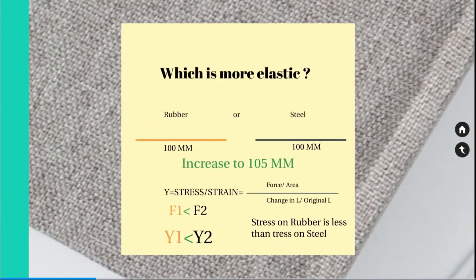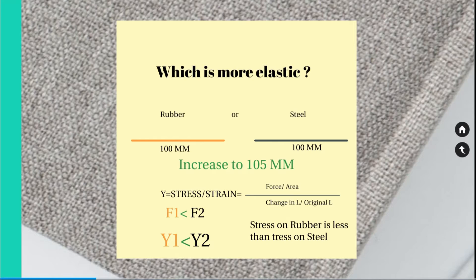Can you say which material is more elastic — rubber or steel? If you don't understand elasticity, you may say rubber is the most elastic material, because most people think that elasticity and flexibility are the same, but they are not. Elasticity of a material can be determined by Young's modulus. The material which has a higher Young's modulus has more elasticity. Consider rubber and steel wire of the same length and same cross-section — for example, 100 mm. If we apply a force to increase the length to 105 mm, Young's modulus equals stress divided by strain, which equals force divided by area.